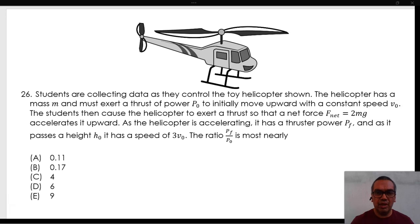The students then cause the helicopter to exert a thrust so that a net force Fnet equals 2mg accelerated upward. As the helicopter is accelerating, it has a thruster power pf, and as it passes a height h0, it has a speed of 3v0.